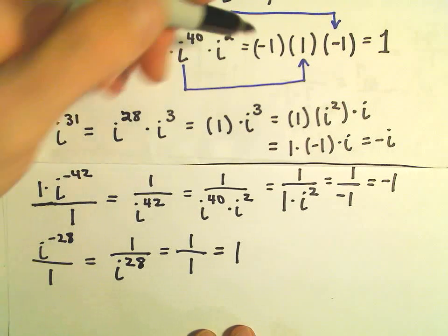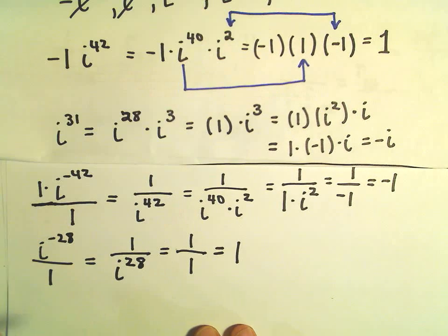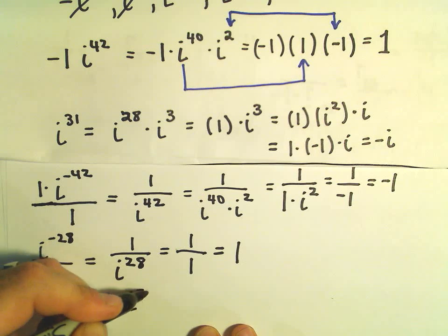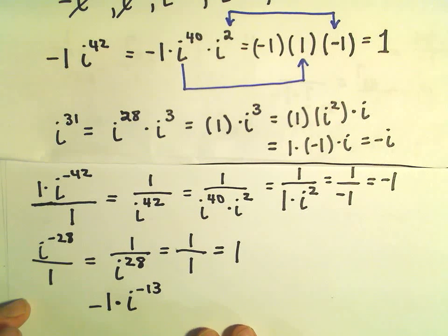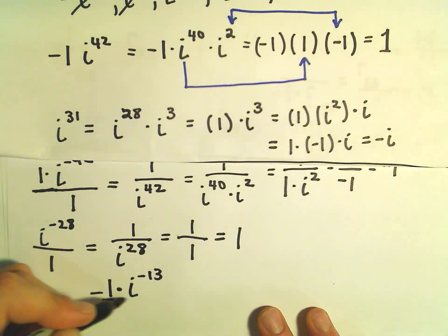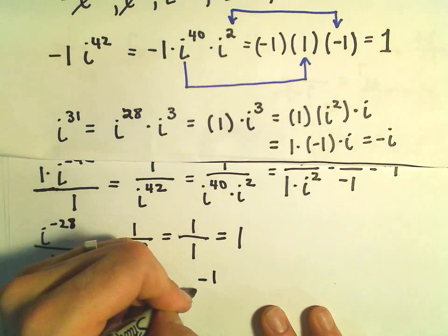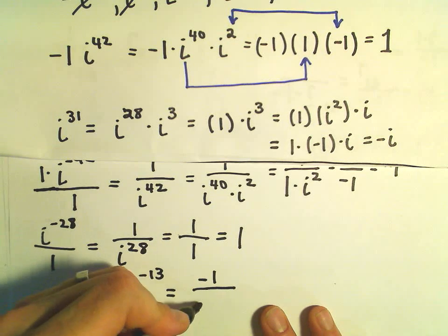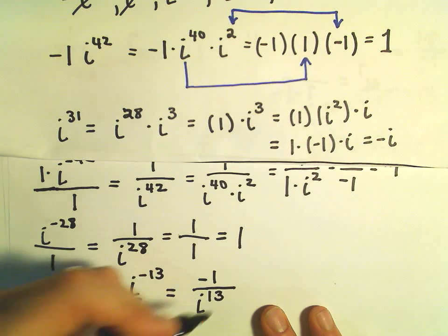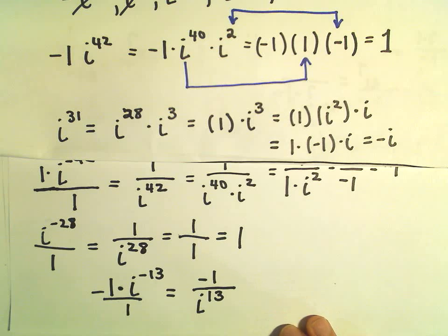Alright, last but not least, we have negative i to the negative 13. I'm going to start off by writing that as negative 1 times i to the negative 13th power. Same thing, we can think about this as being over 1. The negative 1 stays upstairs, and then we'll have i to the positive 13th power in the denominator.